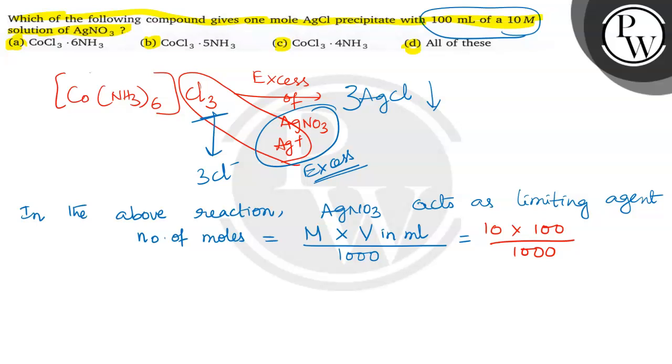If it is milliliters given, we are doing like this. So it will give only one mole. This is one mole of AgNO3.